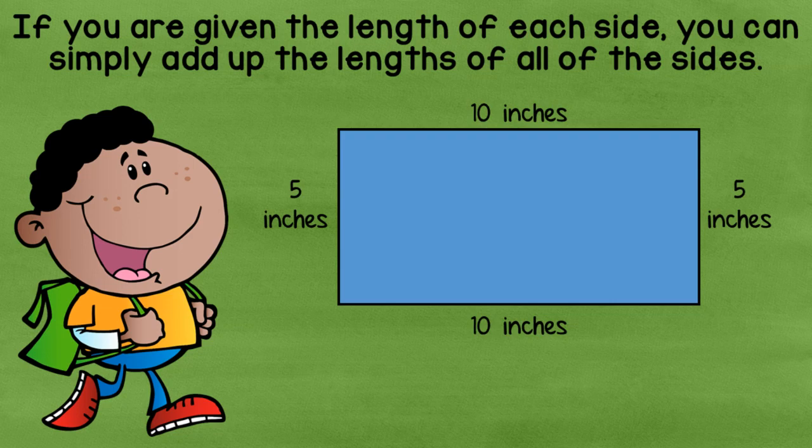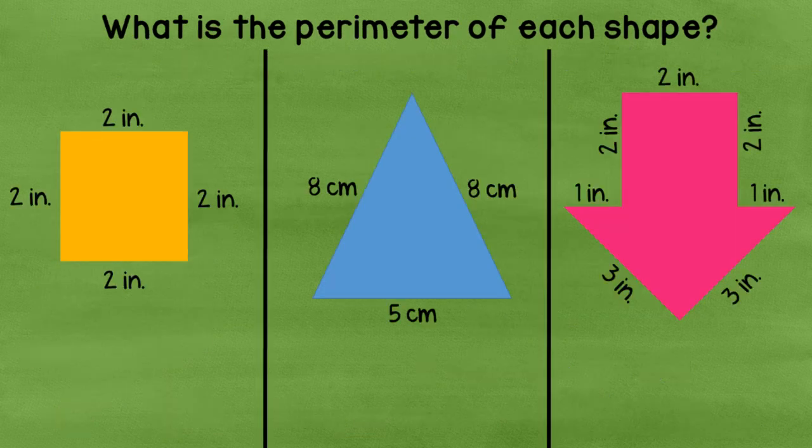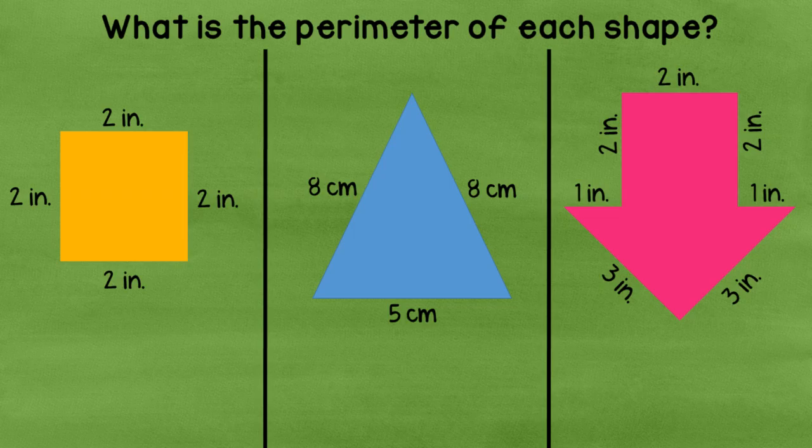And not only can we count units, but we can also add up the lengths if they are given to us. Or we can even measure shapes and then add the lengths up. So on this particular rectangle, we've got sides of five, ten, five, and ten. If we added all of those up, I think, five plus five is ten. And ten plus ten is twenty. And twenty plus ten is thirty. So my perimeter would be thirty inches.